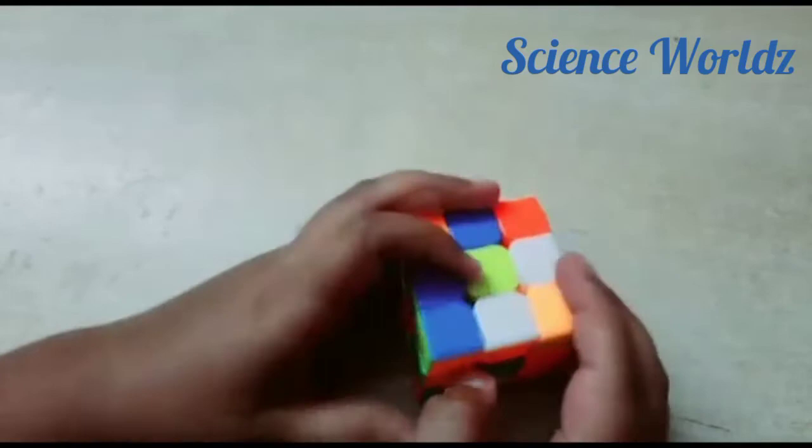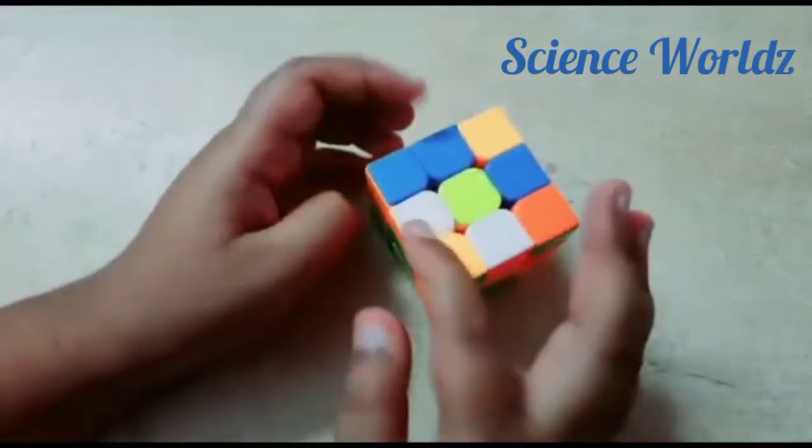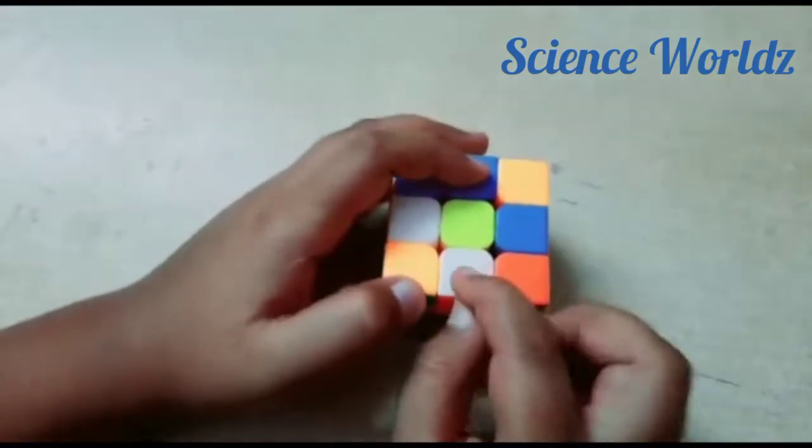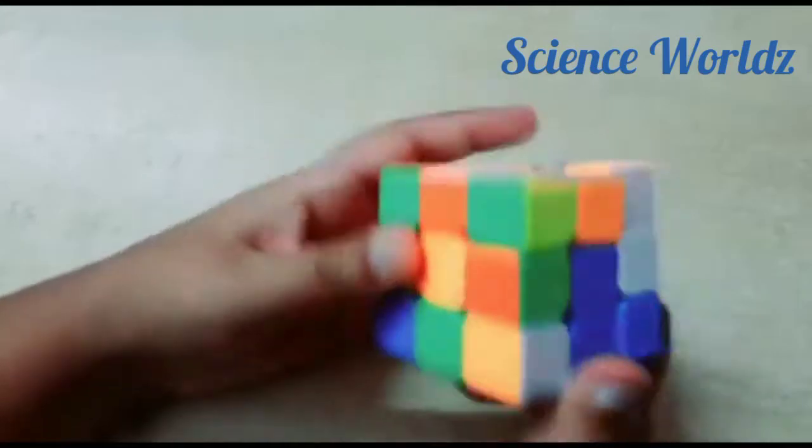Keep it on the bottom so that yellow comes up. Then, we need the edge pieces with white color on it. Here, we have the first one, the second one, the third one, and here is the fourth one.